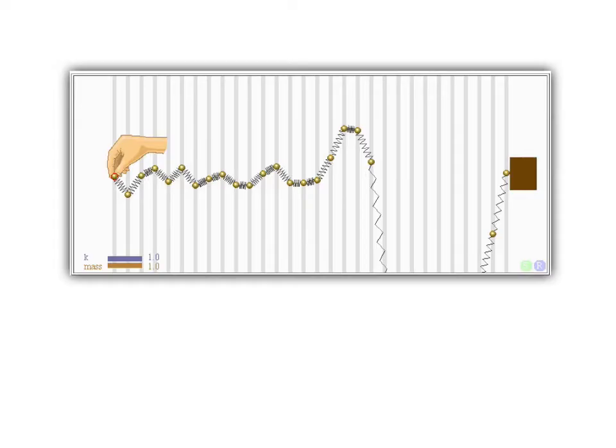What we're watching, which we call a wave, is the energy that the hand is putting into the spring moving along the spring. The masses themselves are not moving along the spring. They're just vibrating in place. The vibrations in the medium that result from energy passing through it are called waves.